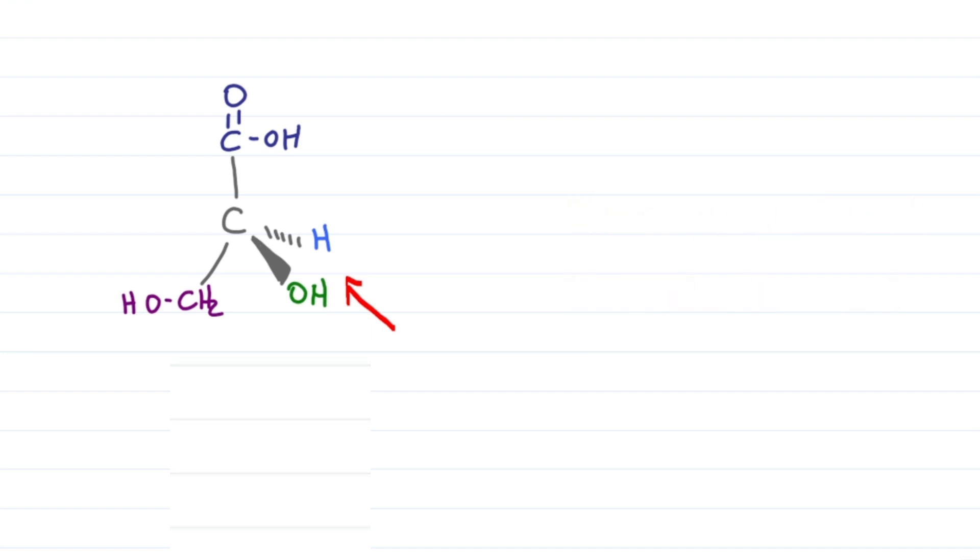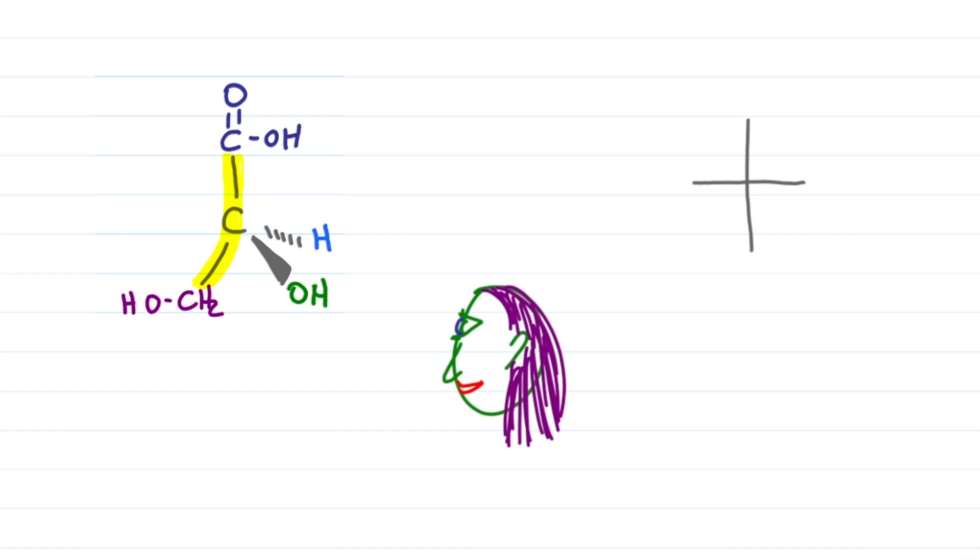So it's almost like you're looking into the screen from the side like this. Looking at it from the side, what do we see? First look for the spine, that's the top and the bottom that are going away from you, where the carboxy at the top lines up with your forehead and the purple CH2OH on the bottom lines up with your chin.